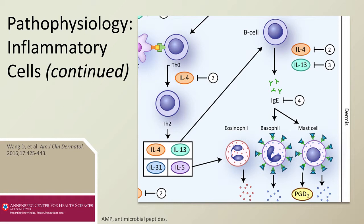IL-4 and IL-13 also travel to the cutaneous blood vessels and increase endothelial adhesion molecule activity, allowing for more immune cells to hone to the active atopic dermatitis skin. IL-4 also provides a positive feedback loop to naive Th0 cells, causing more Th0 cells to differentiate into Th2 cells.